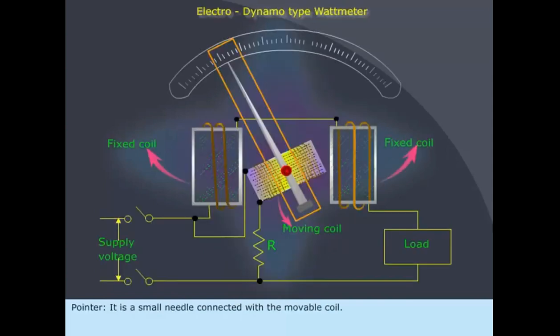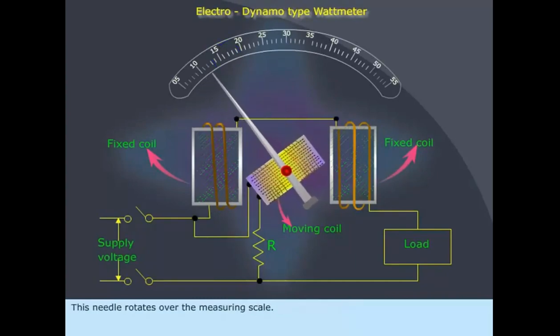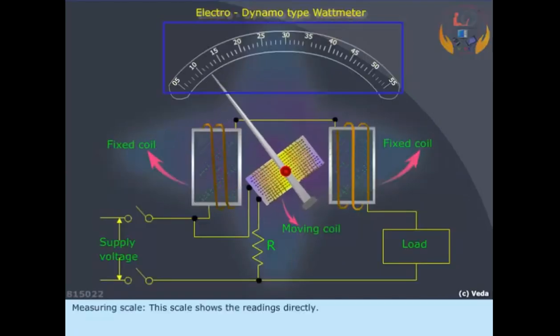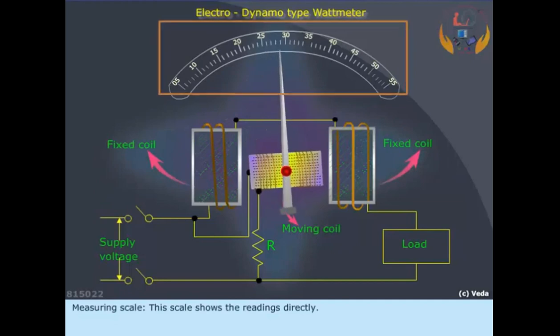Pointer: It is a small needle connected with the movable coil. This needle rotates over the measuring scale. Measuring scale: This scale shows the readings directly.